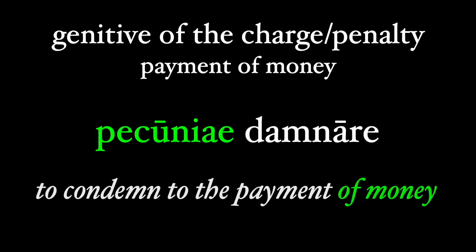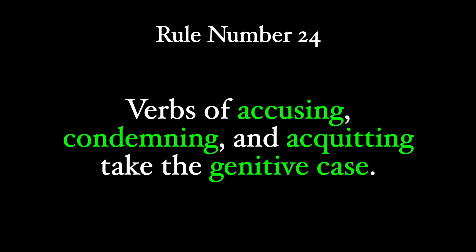The origins of this genitive of the charge or penalty come originally from the genitive of value, with the idea that the penalty will involve payment of money as debt or a fine. As in our example 'pecuniae damnare' — to condemn to the payment of money — you can see how the genitive fits into the thought. It's then a short step from the penalty to the charge itself. So goes rule number 24: verbs of accusing, condemning, and acquitting take the genitive case.